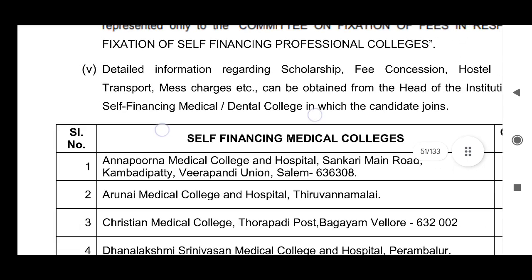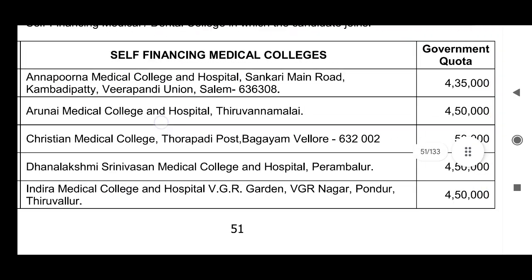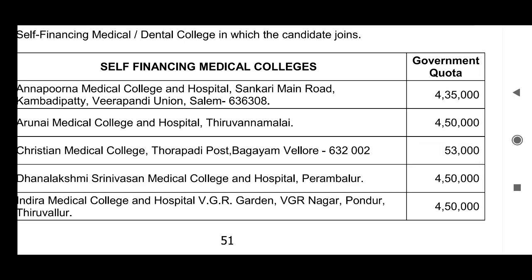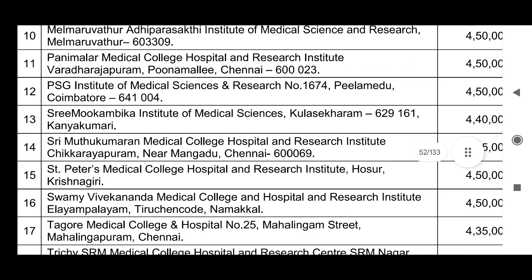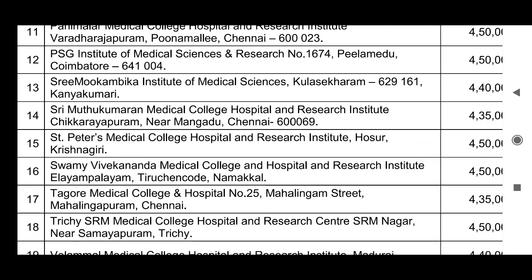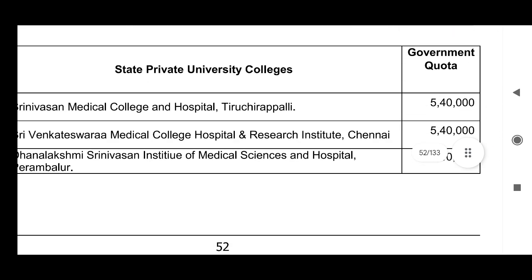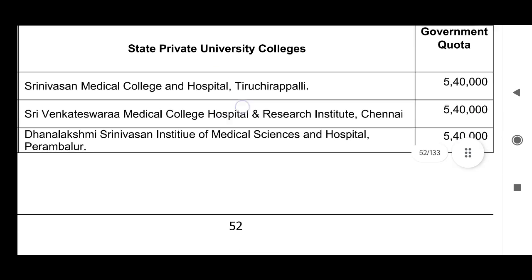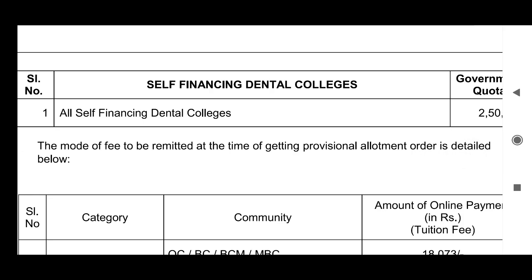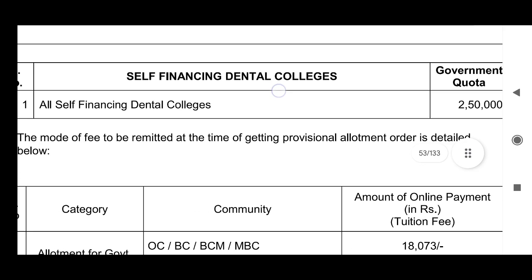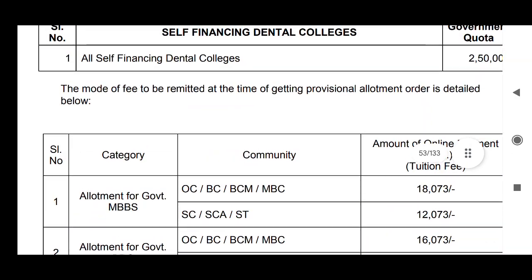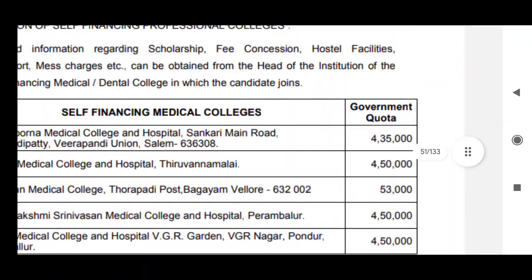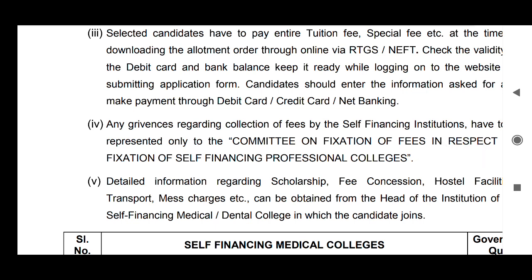Now let us see about the self-financing medical colleges. For almost all self-financing medical colleges, fees are about 4,30,000 to 4,50,000 per year. You can find one college — CMC — at 53,000 only. Some colleges are 5,40,000. Self-financing dental colleges charge 2,50,000 for government quota seats. This covers the tuition fees and the allotment/joining fee when you are joining. This is the fee structure for Tamil Nadu — all medical colleges and dental colleges in various categories.